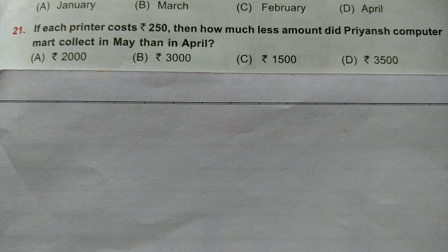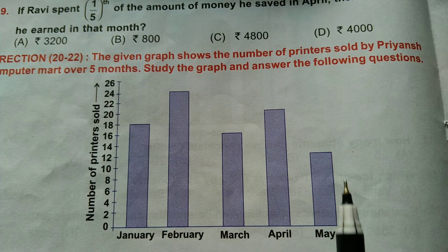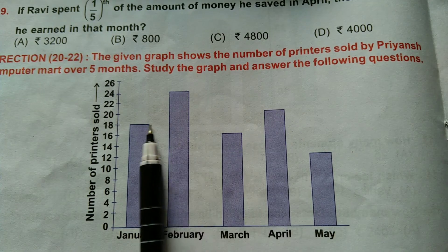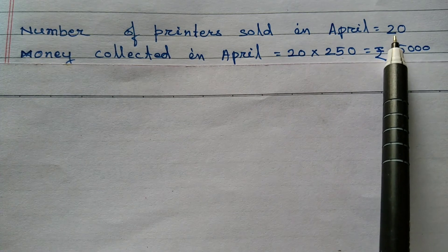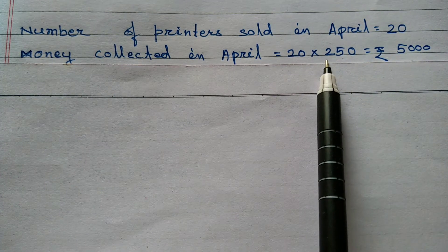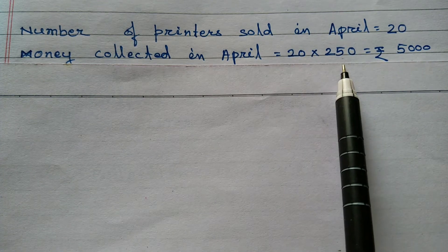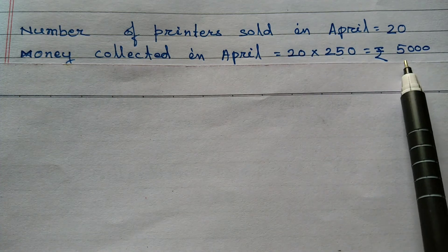Question number 21: If each printer costs 250 rupees, then how much less amount did Priyan's computer mart collect in May than in April? Number of printers sold in May: 12. Number of printers sold in April: 20. Cost of each printer equals 250 rupees. Hence, 20 printers equals 250 into 20, that is equal to 5,000 rupees.